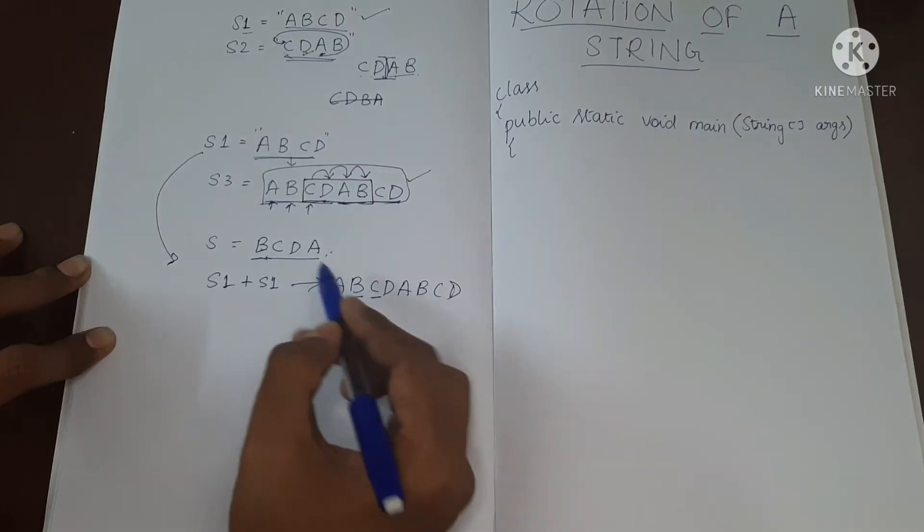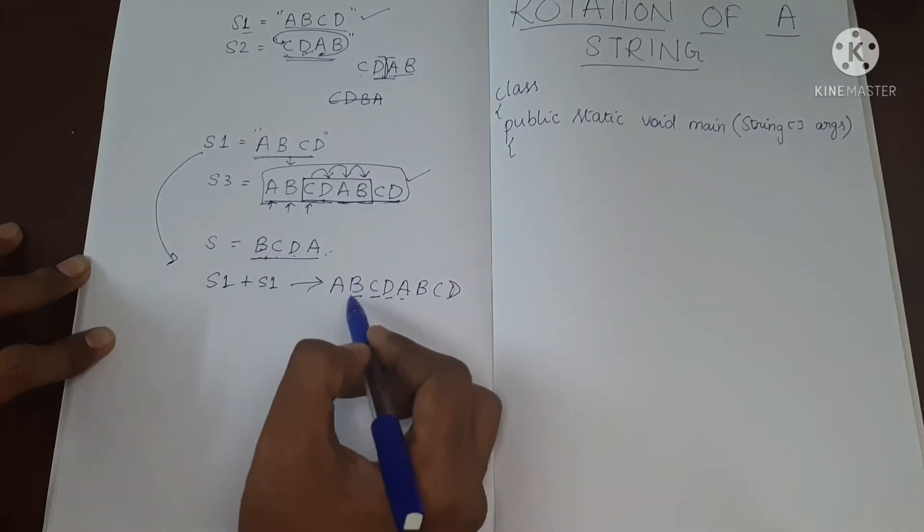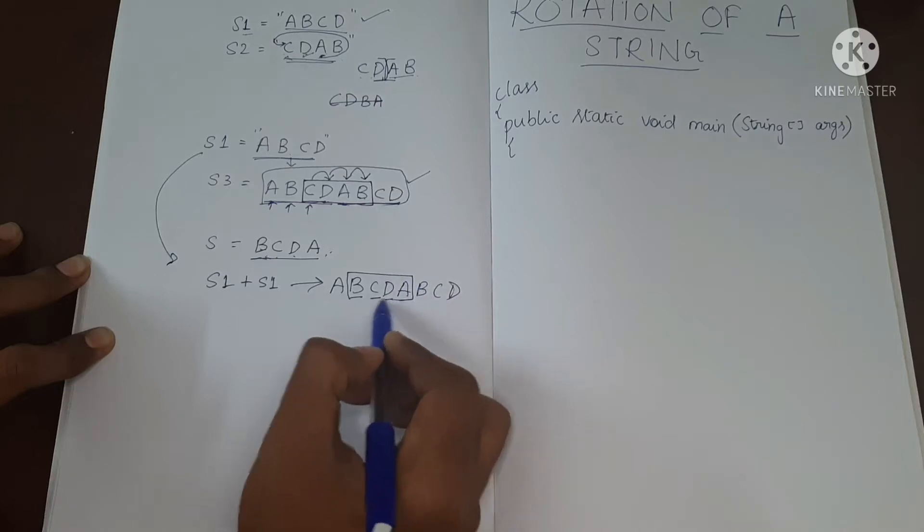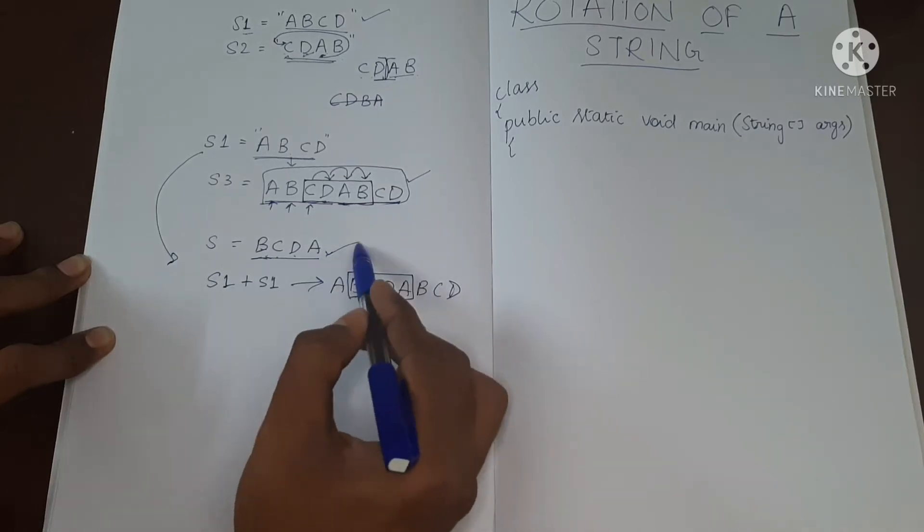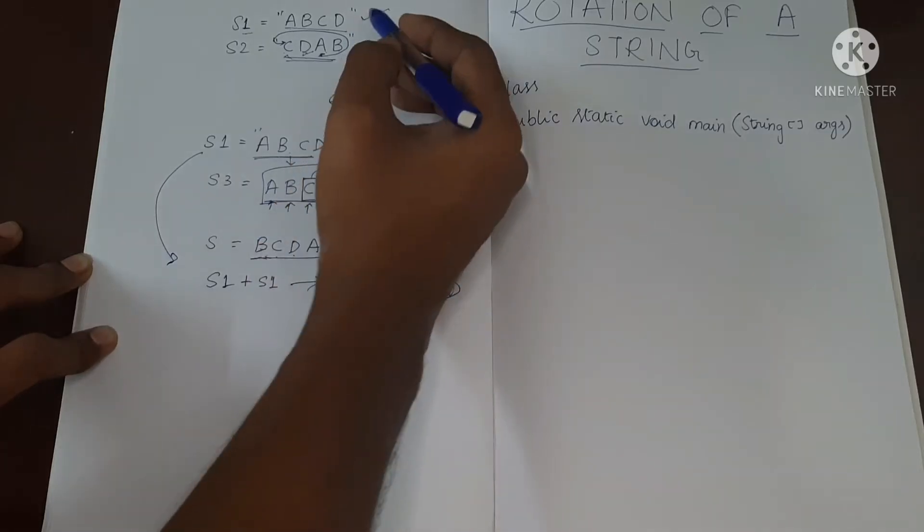So let's see, B, C, D, A. Okay, we found B, C, D, A. So this is a rotation of the string S1.